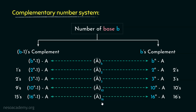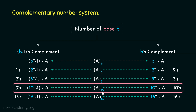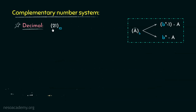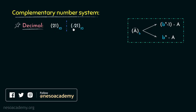Today we will dive a bit deeper. Let's begin with our very familiar decimal number system. Let's consider the decimal number 21. The negative magnitude of it would be minus 21, which can also be represented as 21 bar.